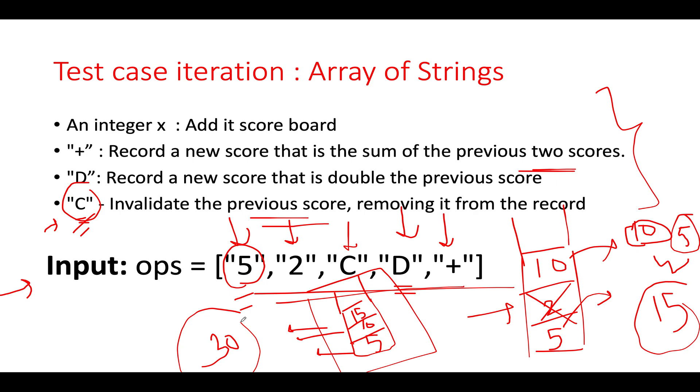The time complexity of this approach is equal to order of length of operations array that is given to us. And the space complexity is again equal to the operations array, the length of the operations array that is given to us that is order of n. So let's get started with the coding section and conclude this algorithm.